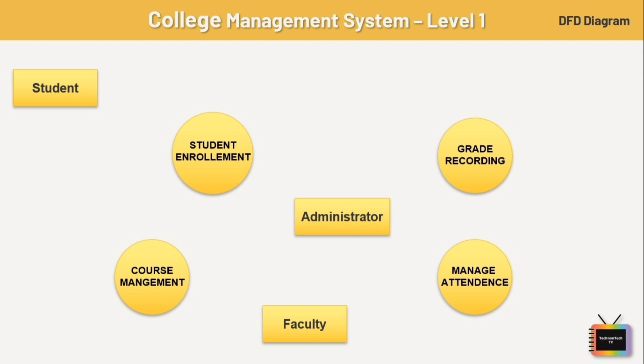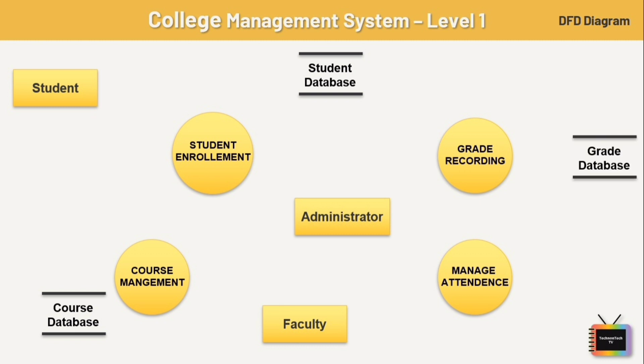We also have four databases: first is the student database, which stores information about enrolled students; next is the course database, which contains details about courses offered; next is the grade database, which stores grades assigned to students; and last is the attendance database, which holds attendance data for students.